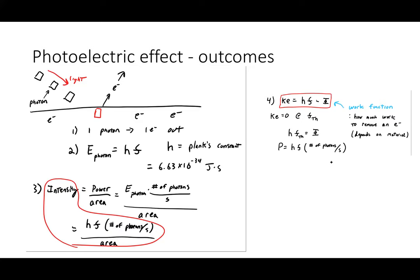To find the kinetic energy of the freed electrons, each electron has a certain binding energy — the amount of energy needed to free it from the material. We call this the work function. Any excess energy above the work function goes into kinetic energy: KE = hf − φ. To find the threshold frequency, we set hf₀ equal to the work function, giving the minimum photon energy that can free an electron.